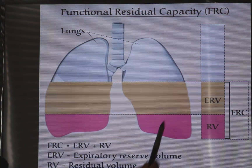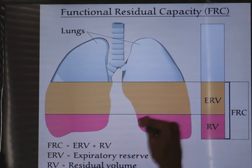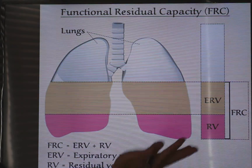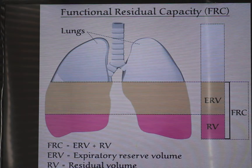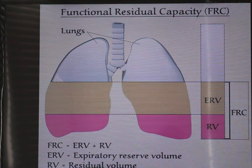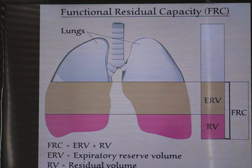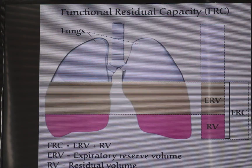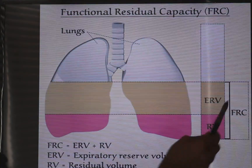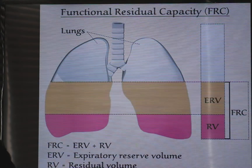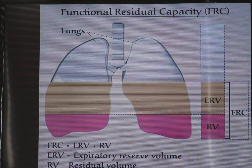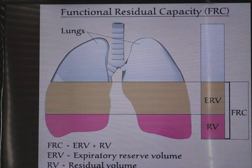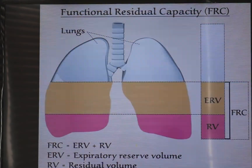Lung diseases also affect FRC. Restrictive lung disease will decrease the elasticity of the lung, so restrictive lung disease will decrease the functional residual capacity. All these previously mentioned conditions decrease the FRC. If you anesthetize a patient with a decreased functional residual capacity, you must pay attention to oxygen saturation because the patient will rapidly desaturate as a result of apnea.